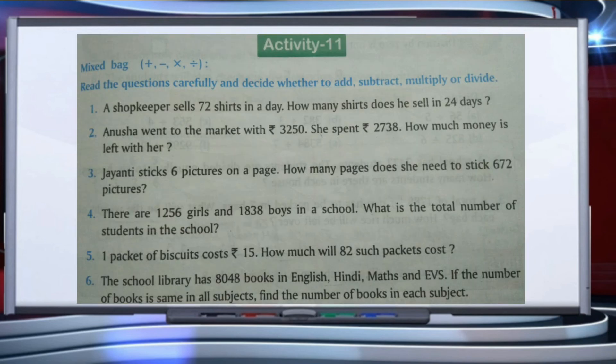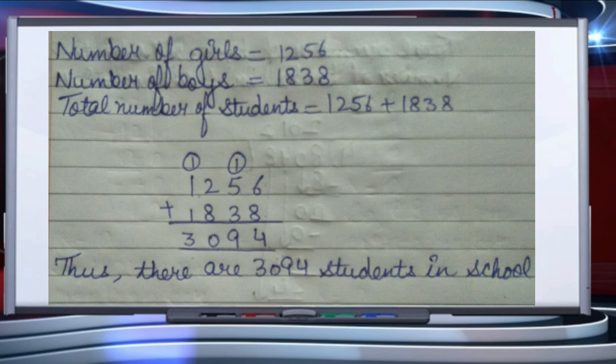The fourth question: there are 1256 girls and 1838 boys in a school. What is the total number of students? Number of girls is 1256, number of boys is 1838. Total students equals 1256 plus 1838. Adding: 6+8=14 write 4 carry 1; 5+3+1=9; 2+8=10 write 0 carry 1; 1+1+1=3. Total is 3094 students in the school.